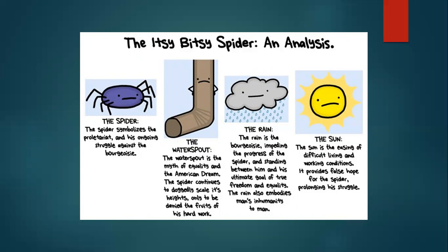So if you see the spider symbolizing the proletariat when we look through the Marxist lens, you analyze the spider as the proletariat who is attempting to be equal in the economic sphere. We could analyze the water spout as the middle of equality, and the rain as the bourgeoisie who do not allow this kind of equality, because they are in a much better place — impeding the progress of the spider and standing between him and his ultimate goal of freedom and equality. The sun is the easing of difficult living and working conditions, providing false hopes for the spider.